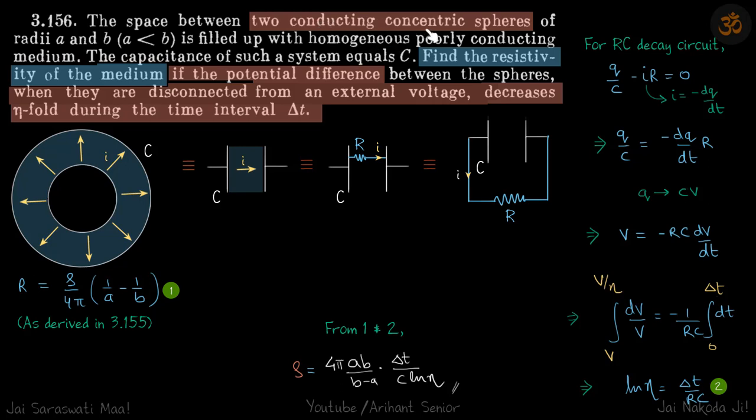We have two conducting concentric spheres of radius A and B filled with a homogeneous material. The capacitance of the system is given as C. We need to find the resistivity of the medium which is in between if the potential difference between the spheres when they are disconnected from an external voltage decreases eta-fold during the time interval delta t.